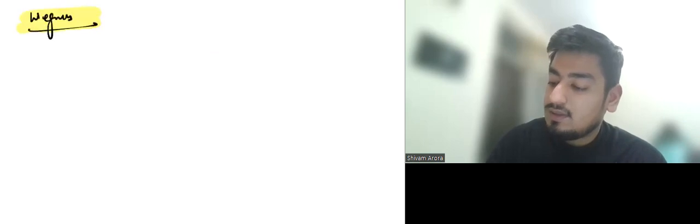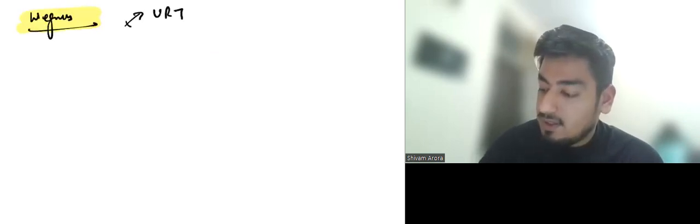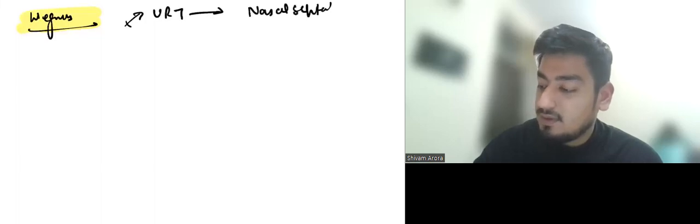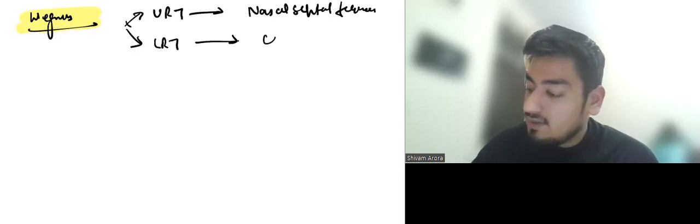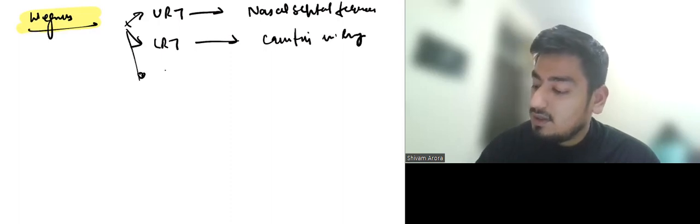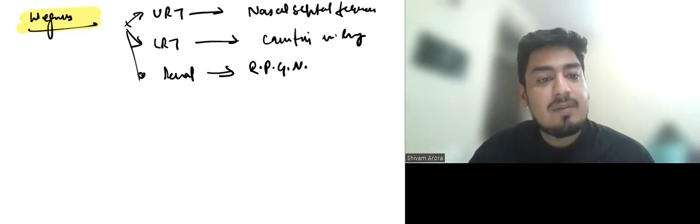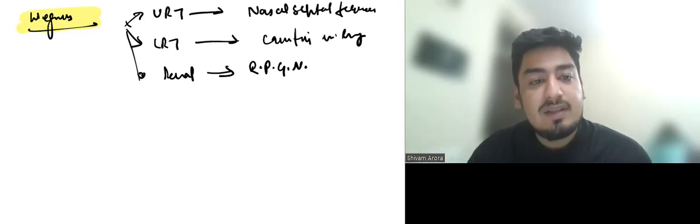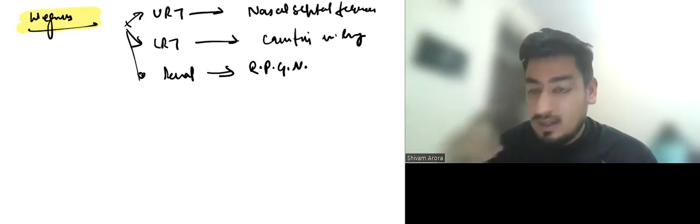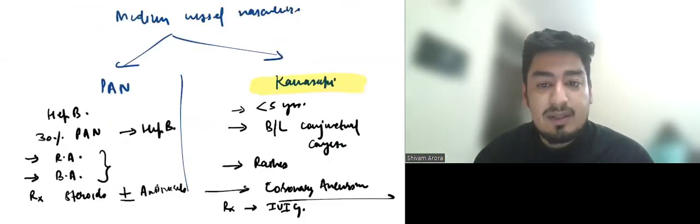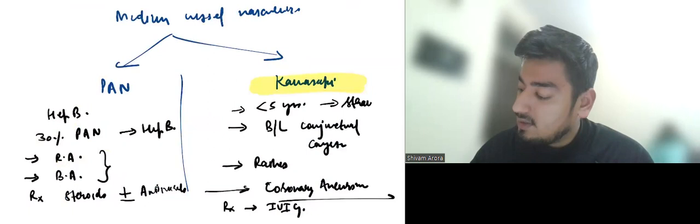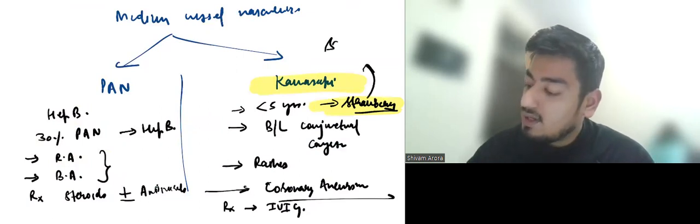Now for Wegener's, systems involved mostly are upper respiratory tract in the form of nasal septal perforations, lower respiratory tract in the form of thick wall cavities in lung, and renal involvement in the form of glomerulonephritis and RPGN. So tell me in the comment section which type of RPGN is caused by these ANCA-associated vasculitis. Now one thing I forgot to tell, this Kawasaki disease strawberry tongue is seen. Strawberry tongue is also seen in scarlet fever.